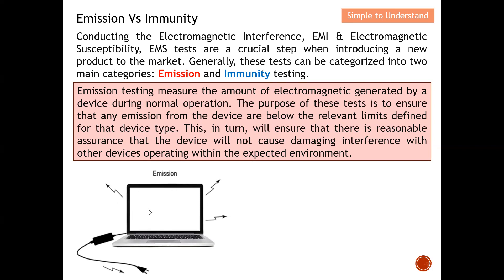For example, a laptop will have its own limit line — basically every device has its own limit line. The purpose of emission testing is to ensure that any emissions from the device are below that limit line. This in turn ensures reasonable assurance that the device will not cause damaging interference with other devices operating within the expected environment. In short, controlling the emission of a new product prevents it from interfering with other devices in the same environment.